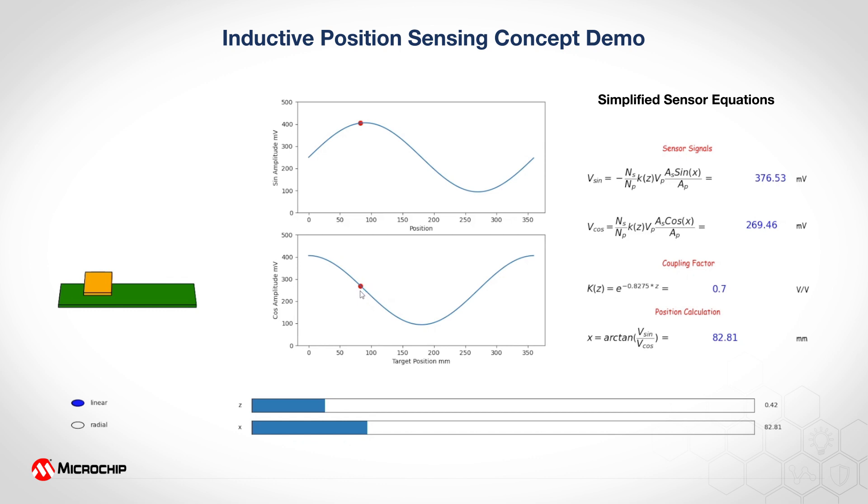One very important observation we can also make here is that by increasing the air gap, our resolution is lost due to a lower dynamic range of the voltage string for both signals.